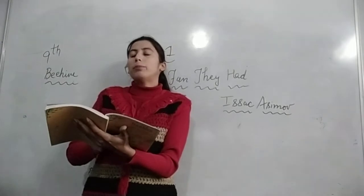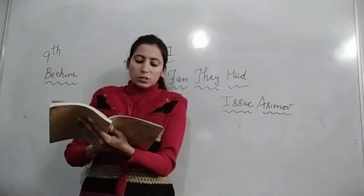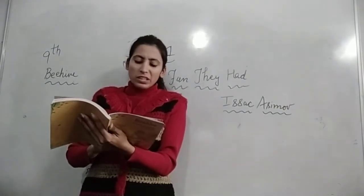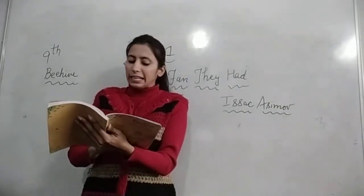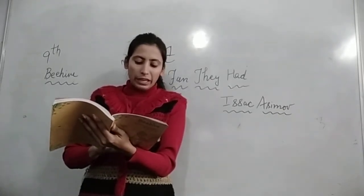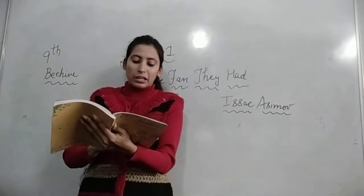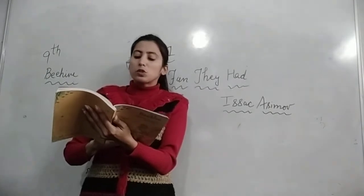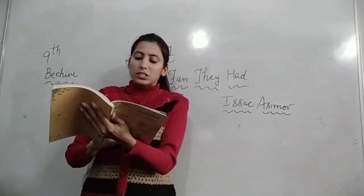What it's about? Tommy said: school. मार्गी ने पूछा ये किसके बारे में है — उसने बोला school के बारे में. Margie said scornfully: school, what's there to write about school, I hate school. Margie को school से बड़ी नफरत थी, उसने बड़े नफरत भरे अंदाज से बोला. Margie always hated school, but now she hated it more than ever. मार्गी जो है वो हमेशा school से नफरत करती थी, बट अब वो और भी ज्यादा नफरत करने लगी थी. The mechanical teacher had been giving her test after test in geography. जो उसके mechanical यानी robotic teacher थे, वो मार्गी को geography में एक test के बाद दूसरा test दिये ही जा रहे थे.